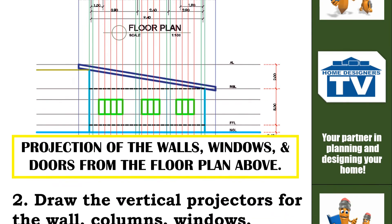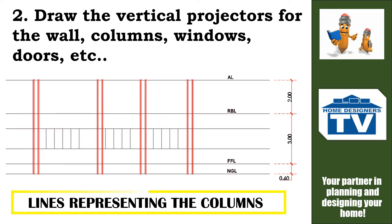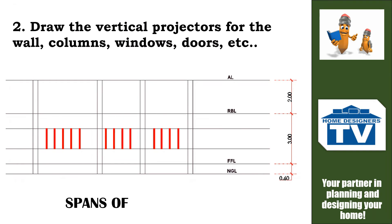Step 2 is to draw the vertical projectors for the wall, windows, doors, etc. The highlighted lines are representing the columns. These lines being highlighted are indicating the spans of the windows.